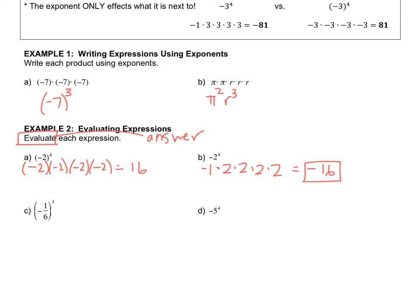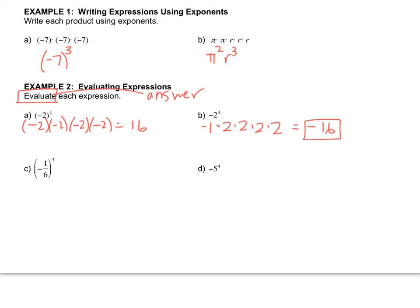In letter C, we're going to raise our fraction to the 3rd power. So we're going to write it 3 times. So negative 1 sixth times negative 1 sixth times negative 1 sixth. The way that you multiply fractions is you just go straight across. So negative 1 times negative 1 times negative 1 is negative 1. And 6 times 6 times 6 is 216. So that's the answer. Don't give it as a decimal because you typed it in your calculator.